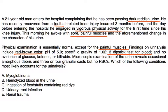Microscopic exam of the urine reveals occasional amorphous debris and three or four granular casts but no RBCs. Which of the following conditions most likely accounts for the UA? Well, again very similar: you have vigorous physical activity, the dipstick is positive plus three, and there's no red blood cells, so it's not hematuria. The most likely cause for this presentation is myoglobinuria.